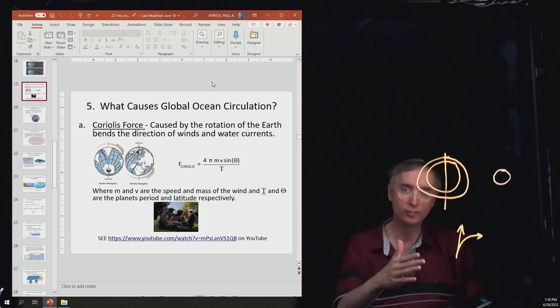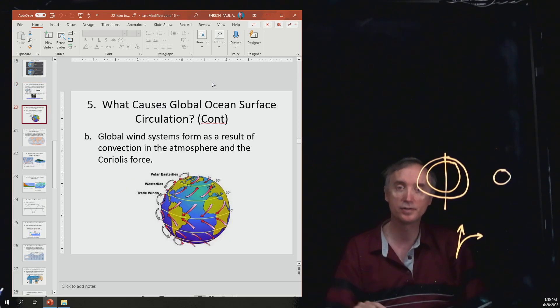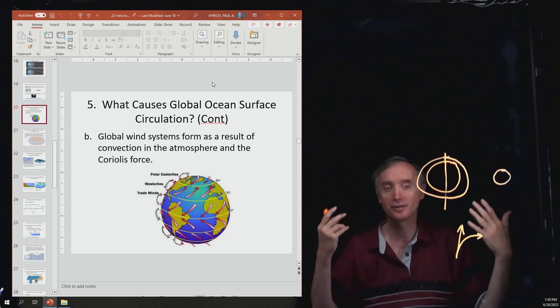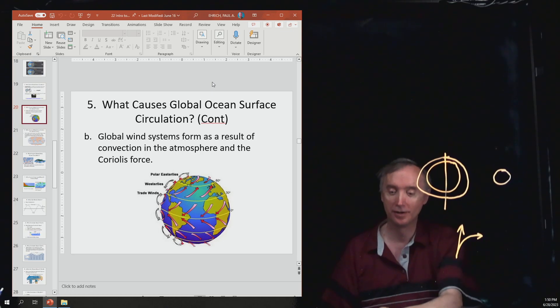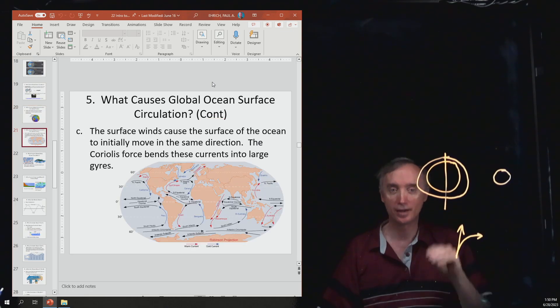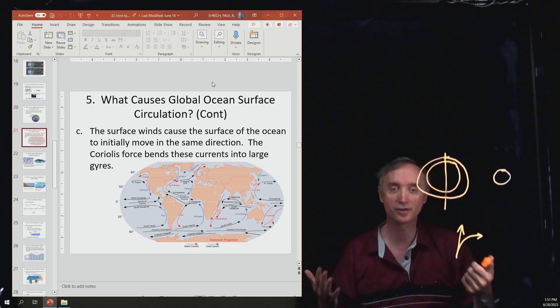So why do we need to know about the Coriolis force? Because that's what causes the global wind systems. Why do we need to know about the global wind systems? Because the global wind systems, as they blow across the surface of the ocean, will cause the surface of the ocean to move. And so those will be the surface currents. A good test question would be: what causes surface currents on the surface of the ocean?